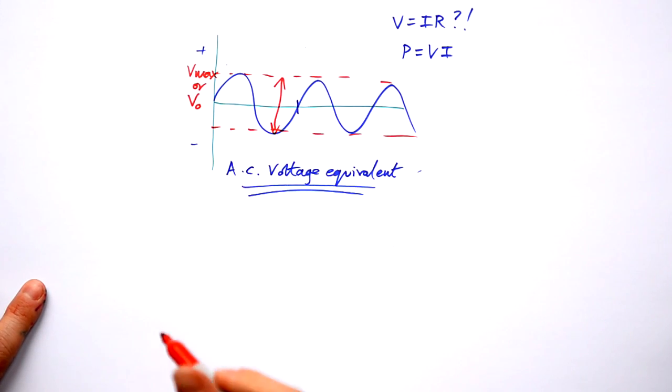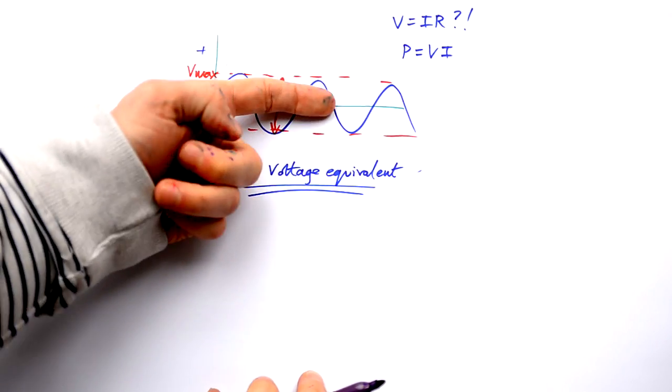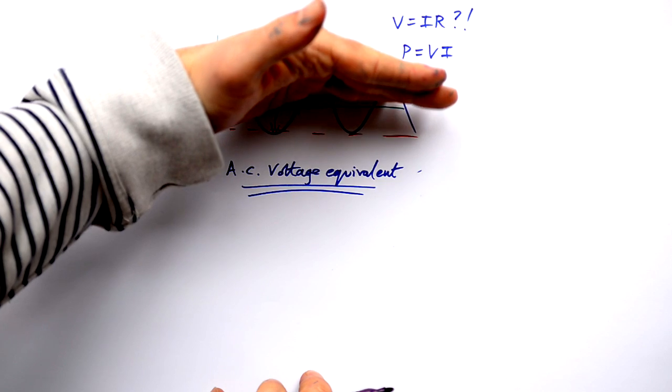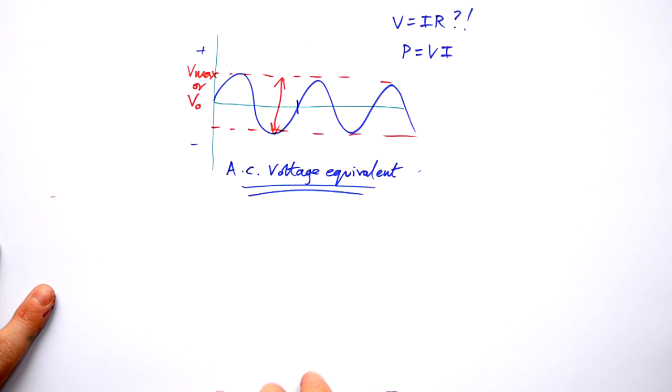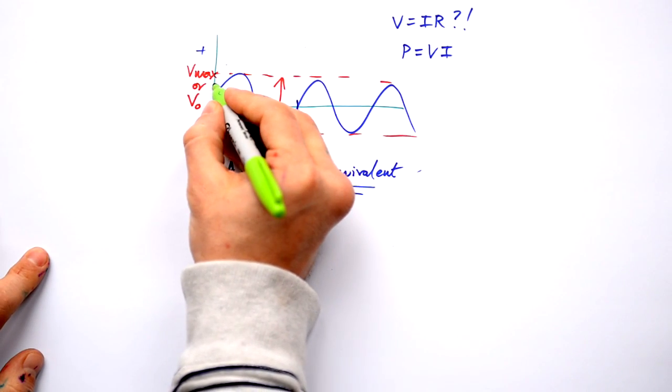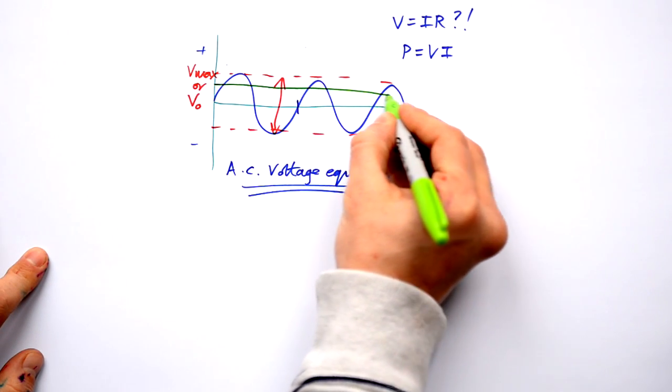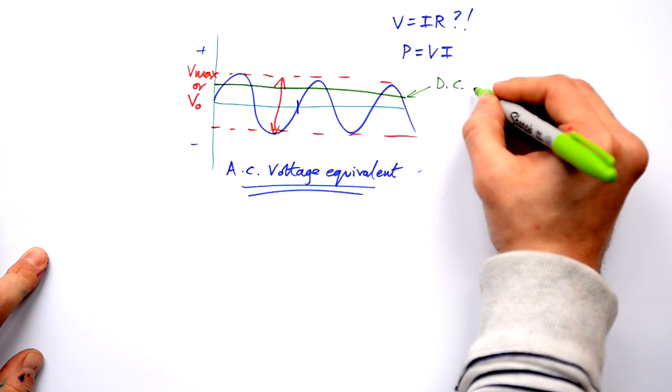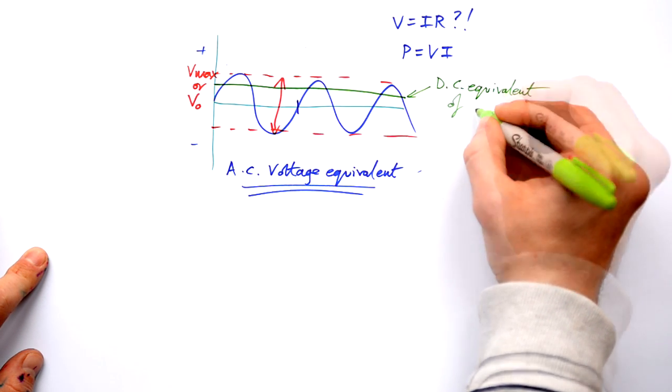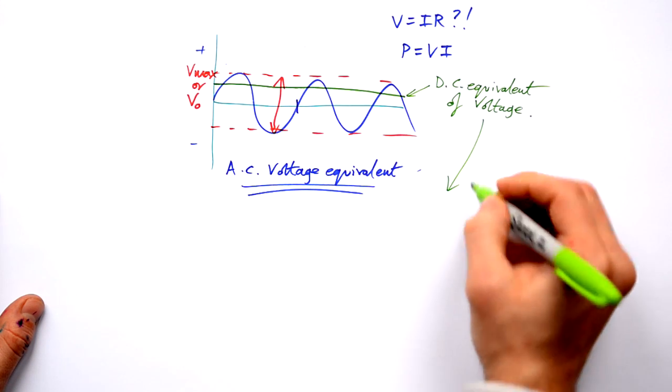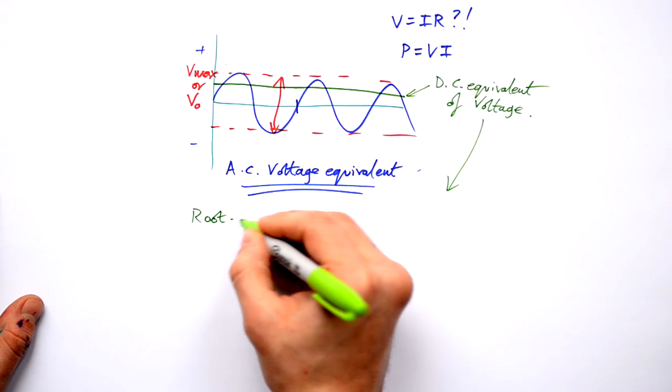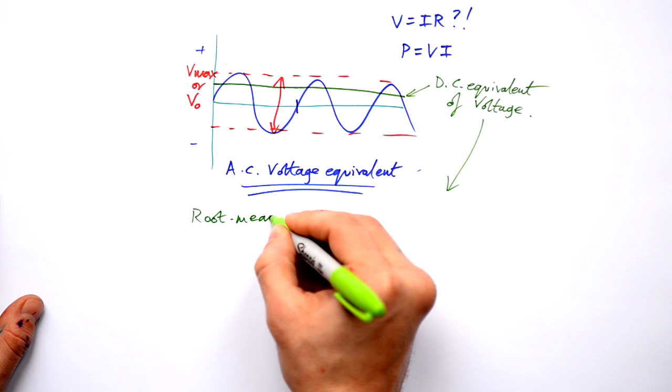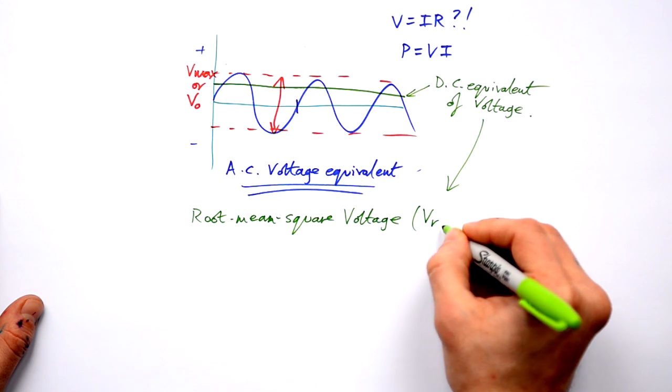Now when it comes to sinusoidal waves, if you want to find out where the equivalent is, you'd have to flip the bottom half onto the top. You'd have to do some math to try and figure out where the flat line would be for DC to be equivalent. Thankfully you don't need to know all about that, but I can tell you that it ends up being about there. That's the DC equivalent of voltage, and we call this the root mean square voltage, or VRMS for short.